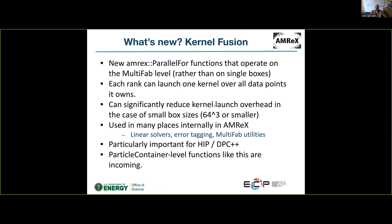One new feature to highlight is new versions of the parallel_for functions that operate at the multi-fab level rather than on single boxes. Instead of writing an mfiter loop with parallel_for and specifying box bounds, you pass in a whole multi-fab, and each rank figures out what data points it owns and launches just one kernel over all those points. This can significantly reduce kernel launch overhead, especially for small box sizes.